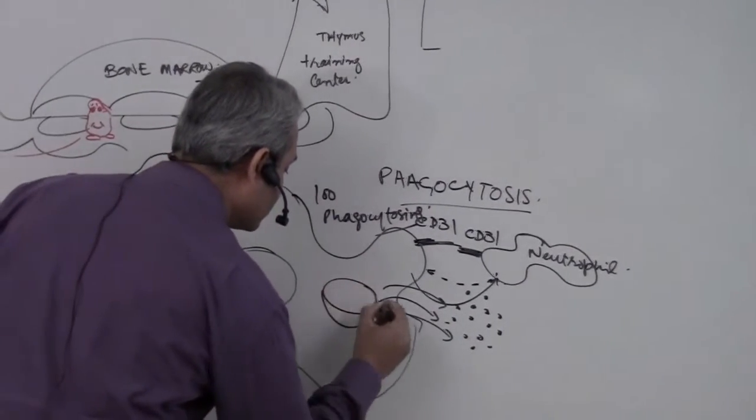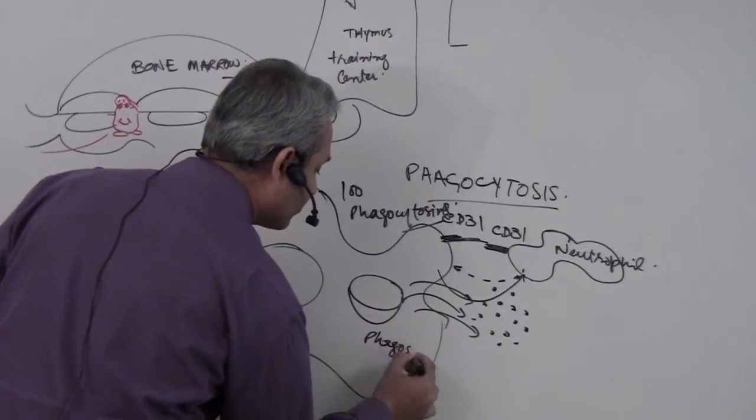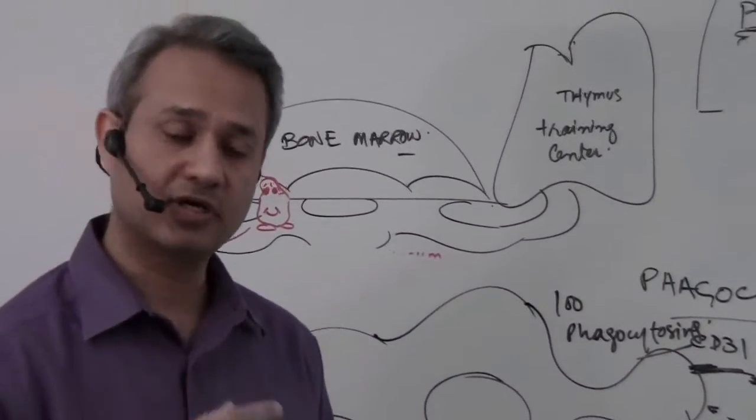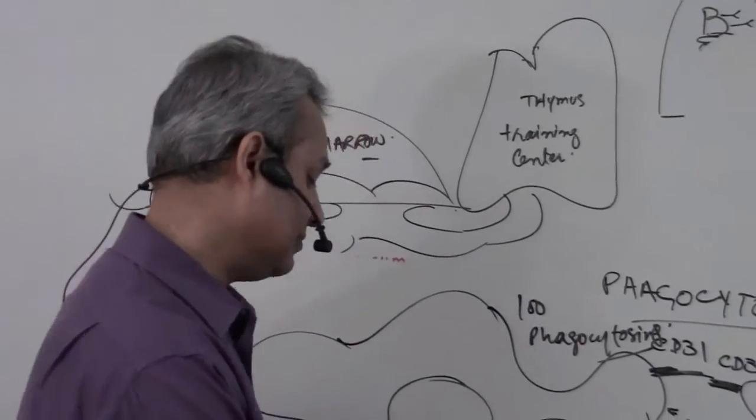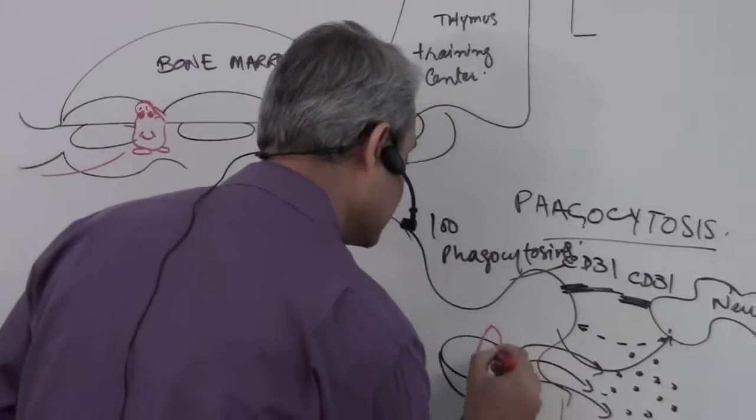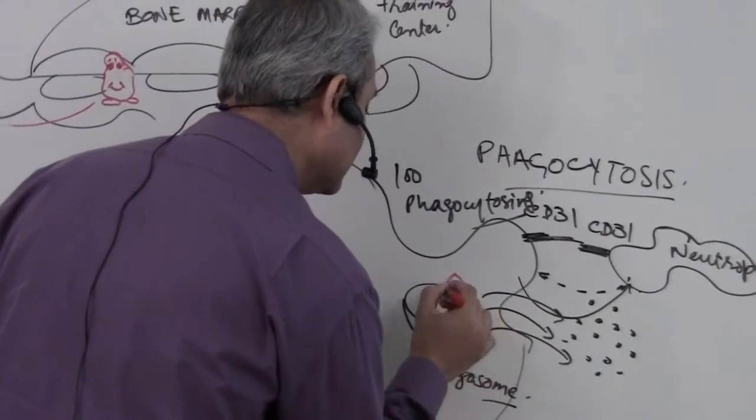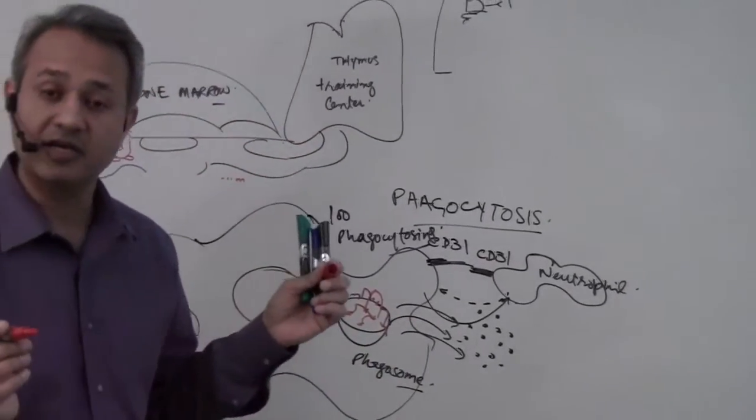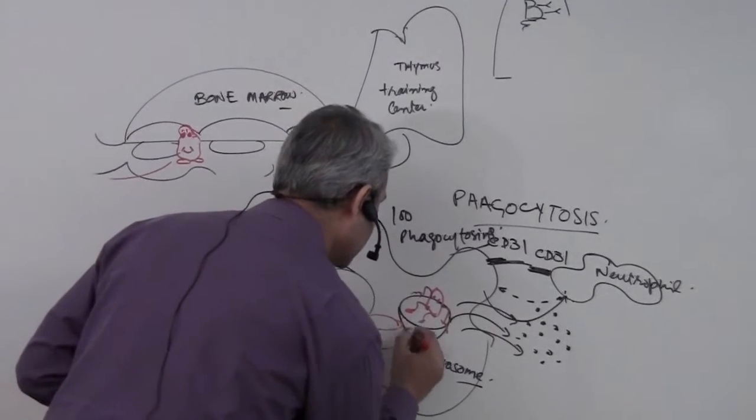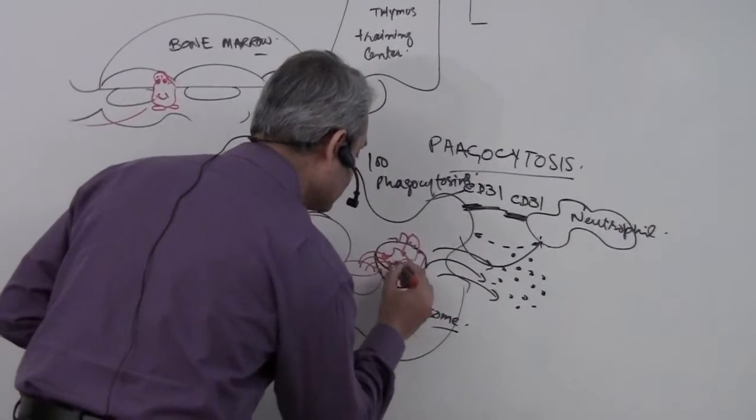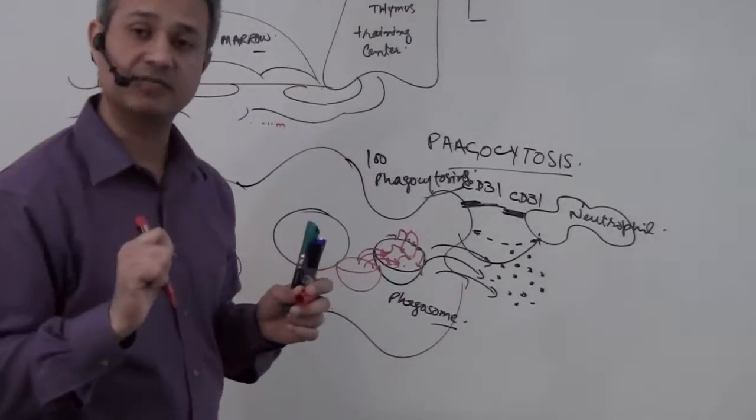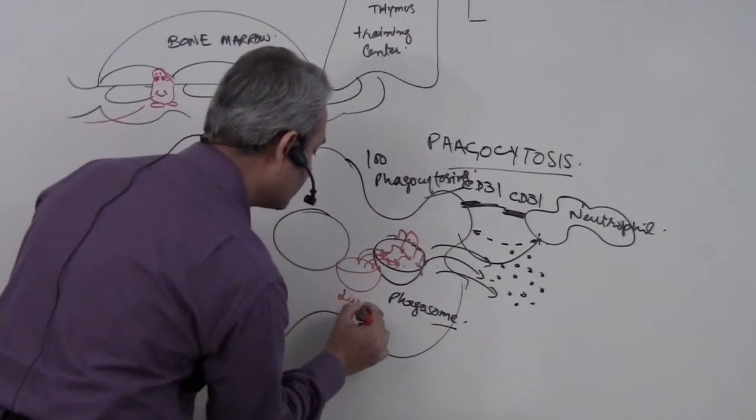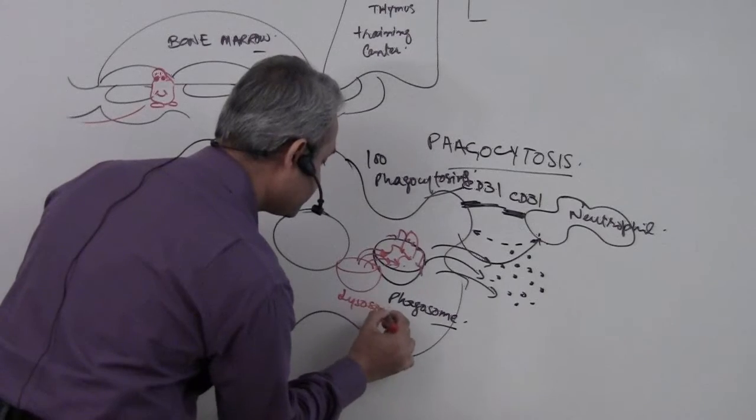Once phagocytosis occurs, we form a phagosome. A phagosome is an eaten-up product with bacteria sitting inside, like a jacuzzi tub. Lysosomes appear and connect, spilling lysosomal enzymes that digest the bacteria or pathogen. This combination of phagosome and lysosome is called a phagolysosome or digestive vacuole.